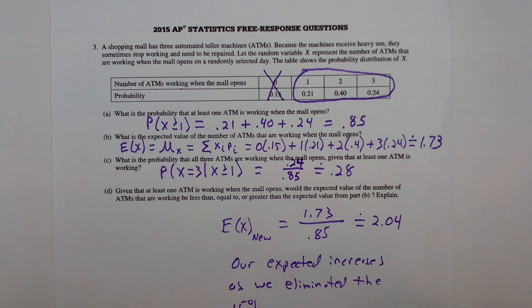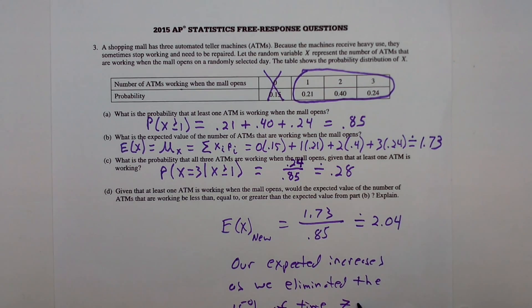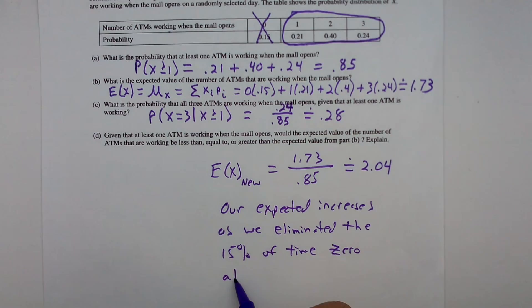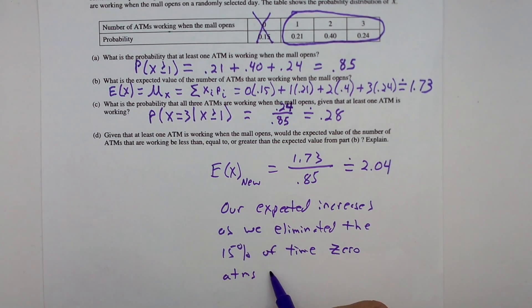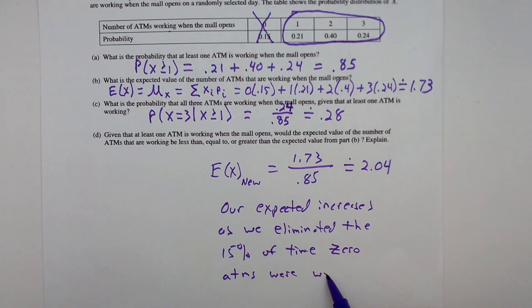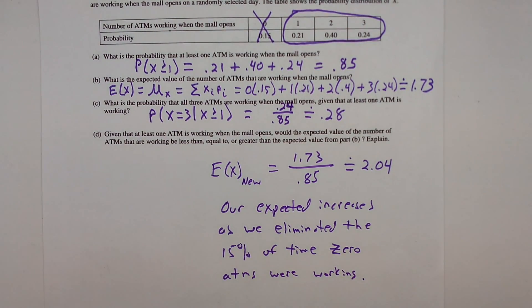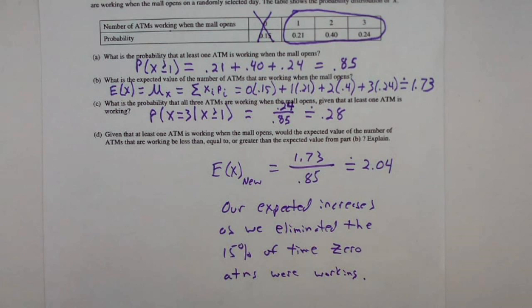We need to say that our expected value increases as we have eliminated the 15% of time zero ATMs are working. That concludes question number three.